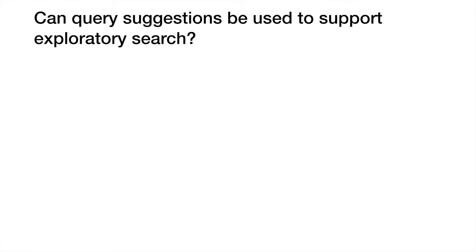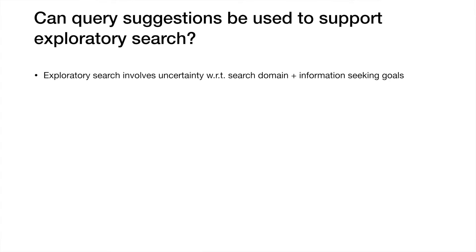In our paper we wanted to understand how query suggestions impact users performing exploratory search. Exploratory search involves search activities where the goal is to discover or learn new information. This can encompass situations where there is search domain uncertainty — where we don't know what documents are available to us — or uncertainty with how we're going to achieve our search goals, maybe if we're in the process of learning about unfamiliar topics.